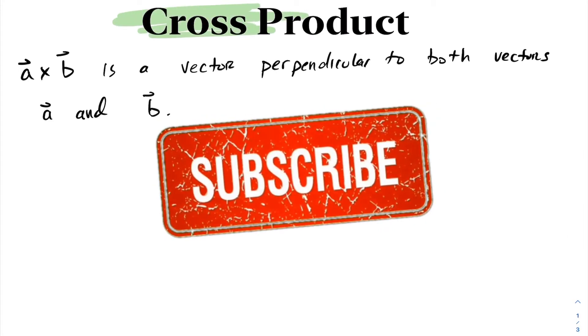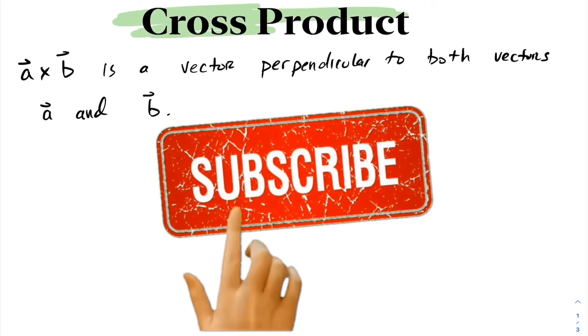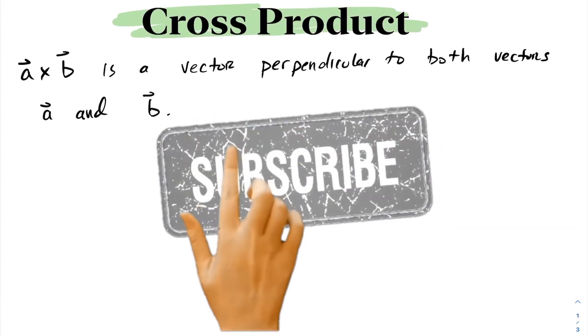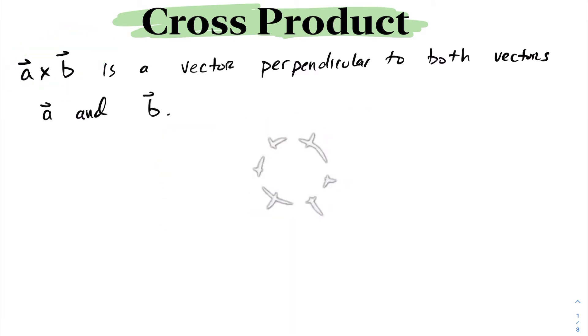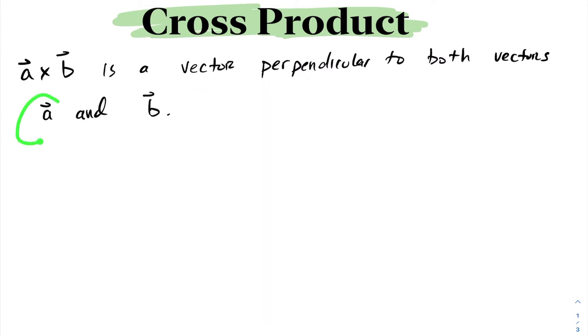In today's lesson, we're going to be looking at the cross product of two vectors. For two vectors a and b, the cross product, denoted a cross b, is a vector that's perpendicular to both a and b.